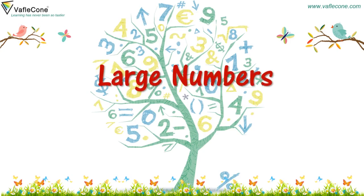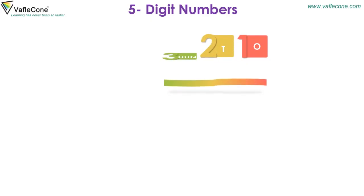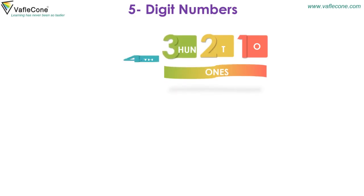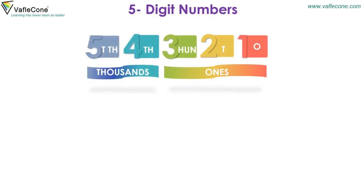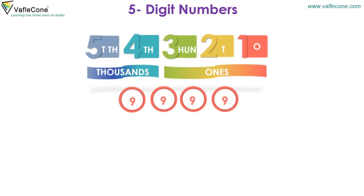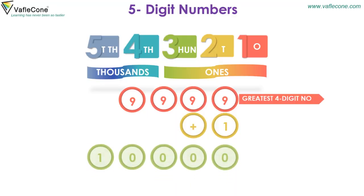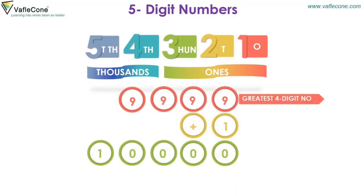Large Numbers: 5-digit numbers require 5 places — 1s, 10s, 100s, 1000s, and 10,000. We know that 9999 is the greatest 4-digit number, and when we add 1 we get 10,000, which is the smallest 5-digit number.